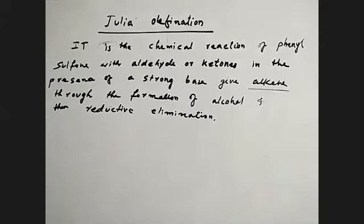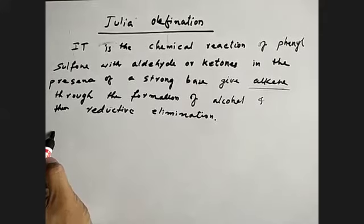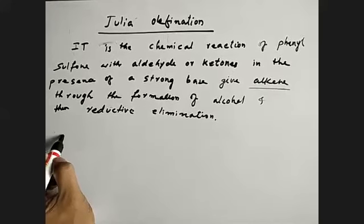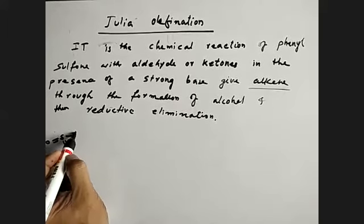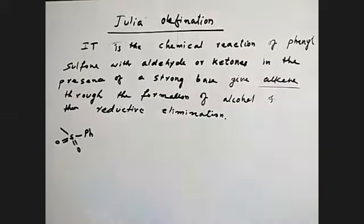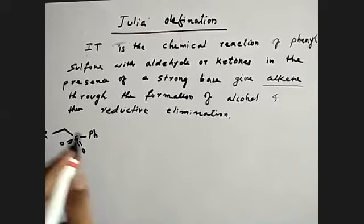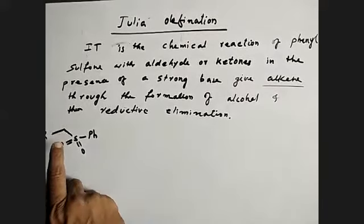See, I will write a reaction here so it will be easy and fast to understand. For example, I am writing the example of Julia. Consider this is what the phenylsulfone. So how I can write phenylsulfone — this is sulfone, the valence of sulfur is 6. Now here suppose R, but here should be one SP3 carbon, otherwise the reaction will not proceed. Here must be SP3 carbon attached to sulfur.